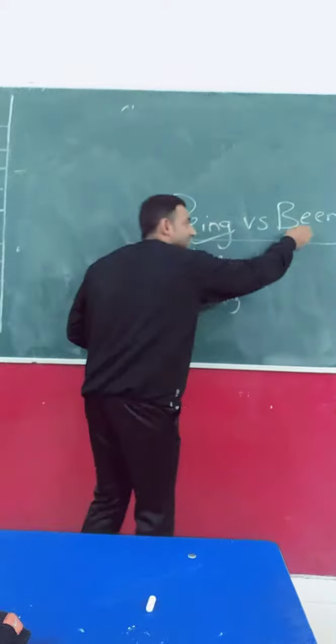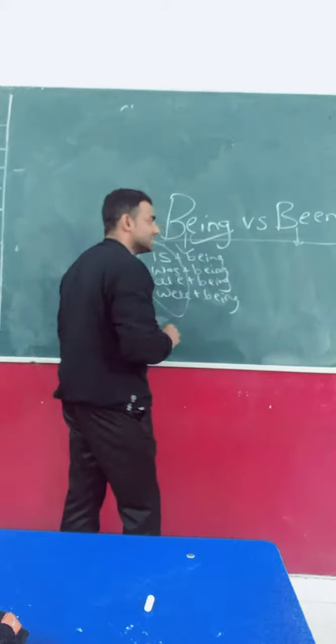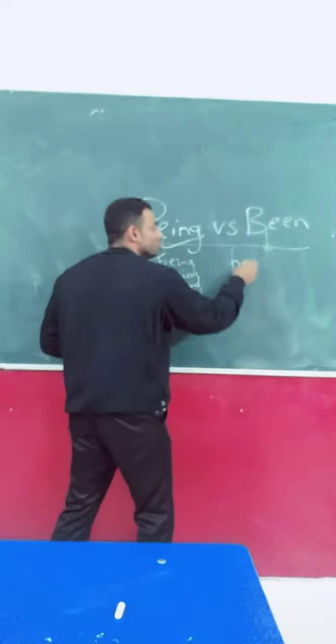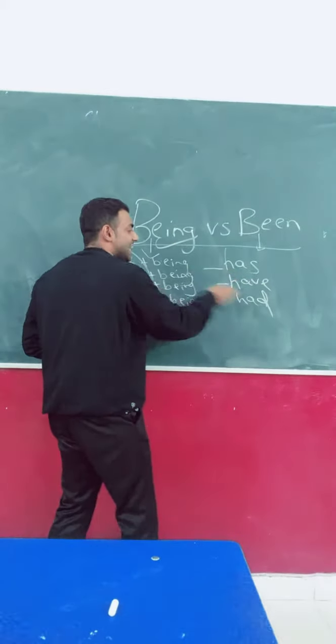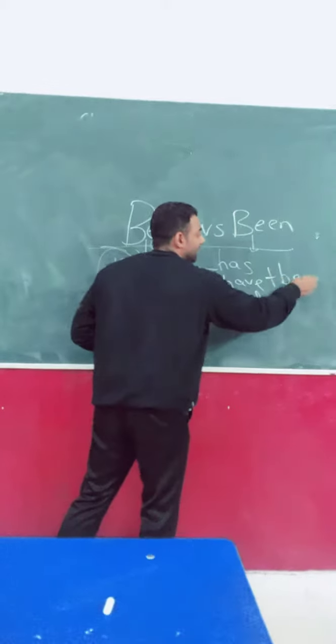And let's see what this word suggests. We can only use three helping verbs: has, have, had, with the word being.